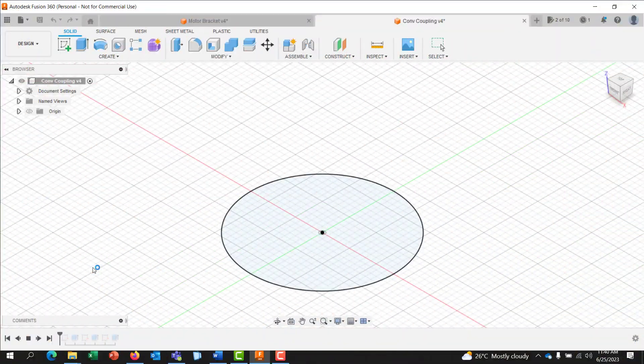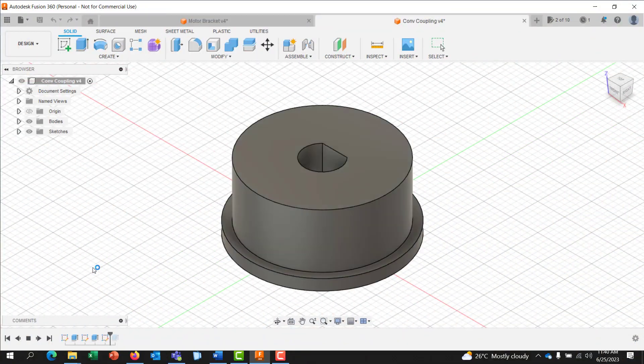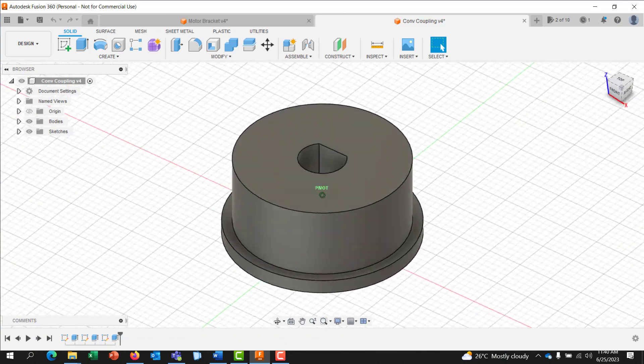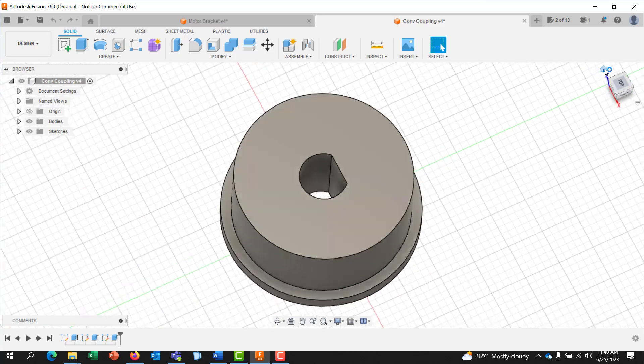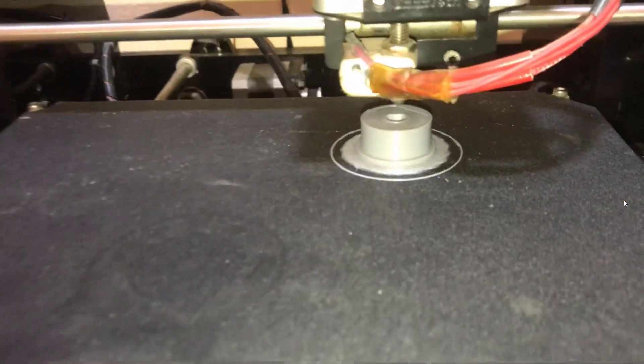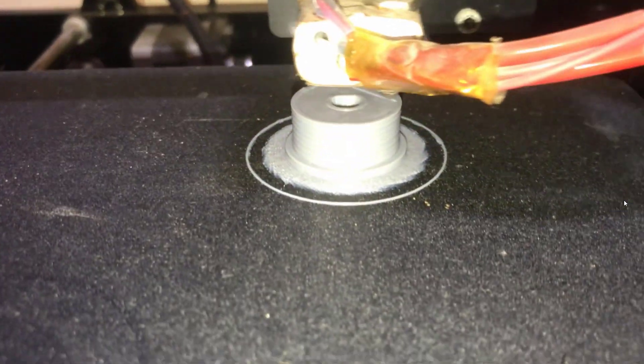Then this is the coupling that we need, also designed using Fusion 360. We can see the design right there. We can see where the shaft of the motor is supposed to plug into.